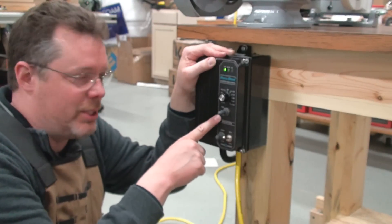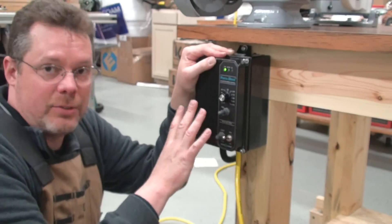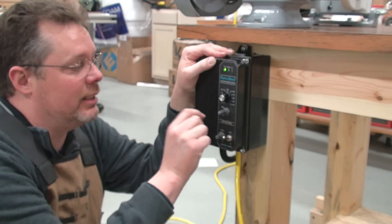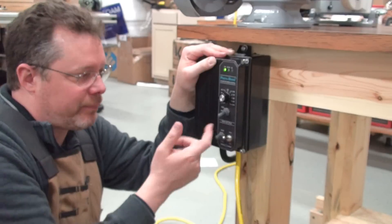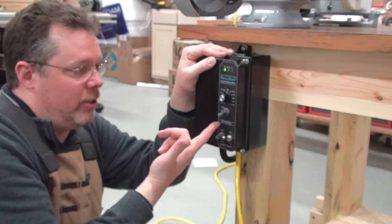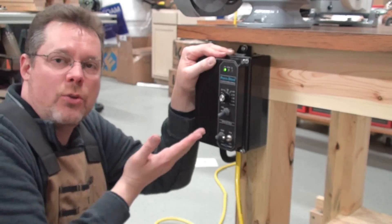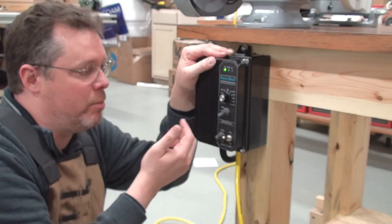Now these forward-brake-reverse switches are specially designed, the ones from KB Electronics, specially designed with a little locker in it. So that when you switch it into one direction, you can't go from, in this case, reverse to forward in one movement and cause damage to the motor.